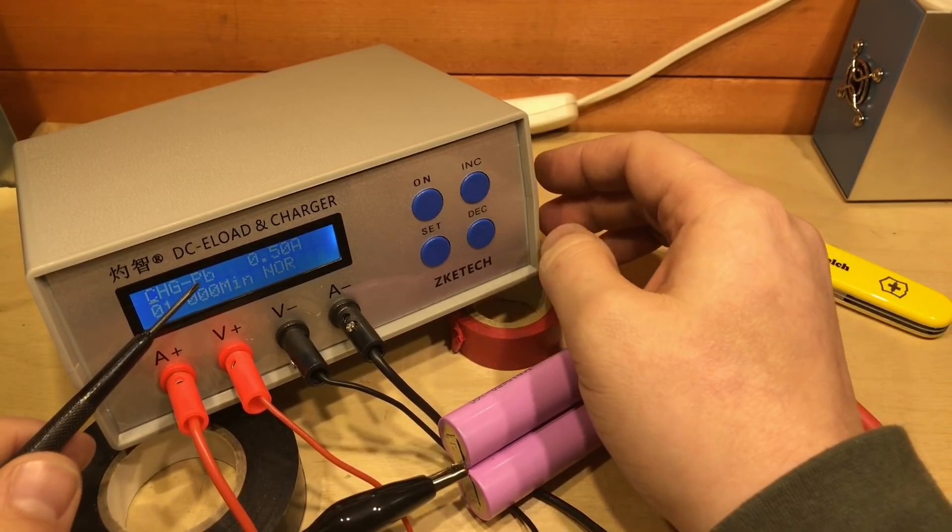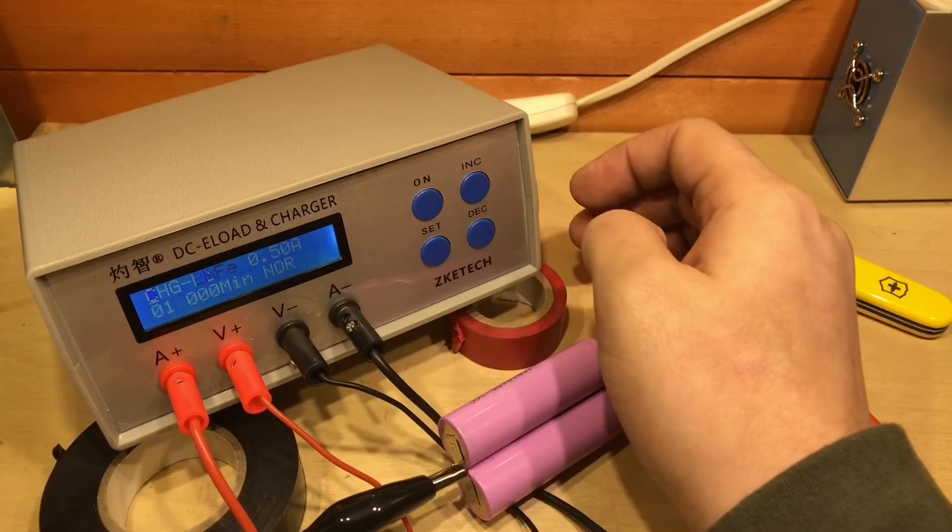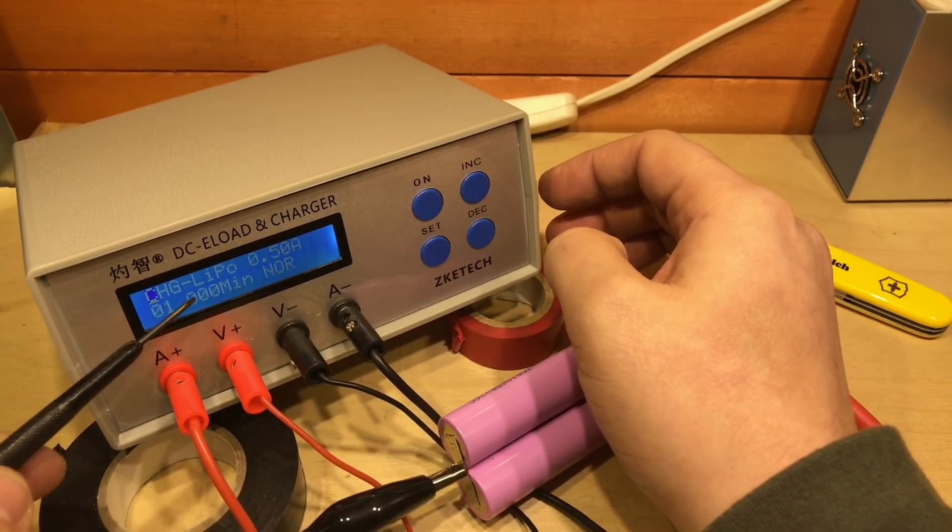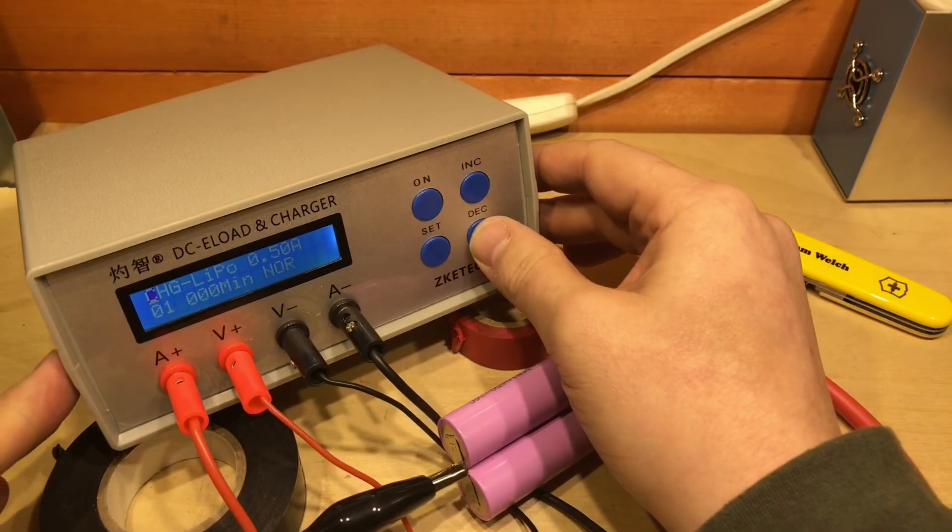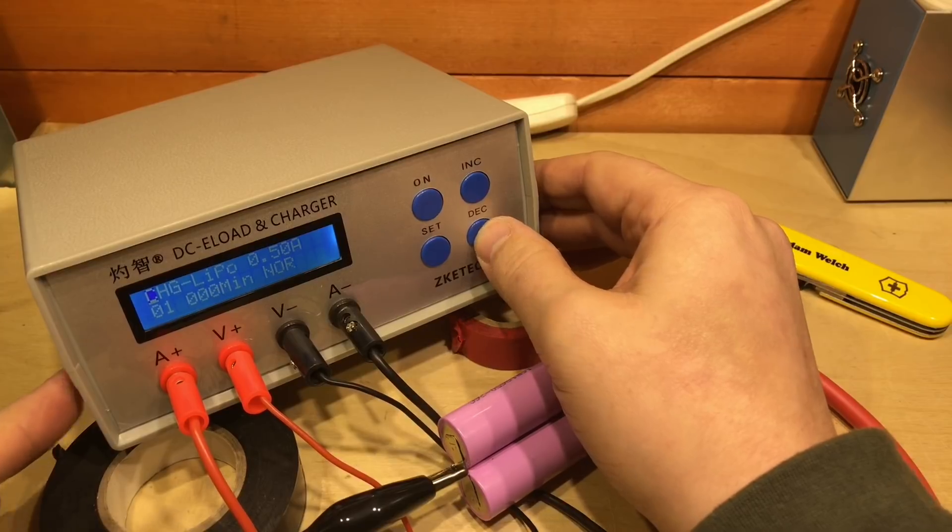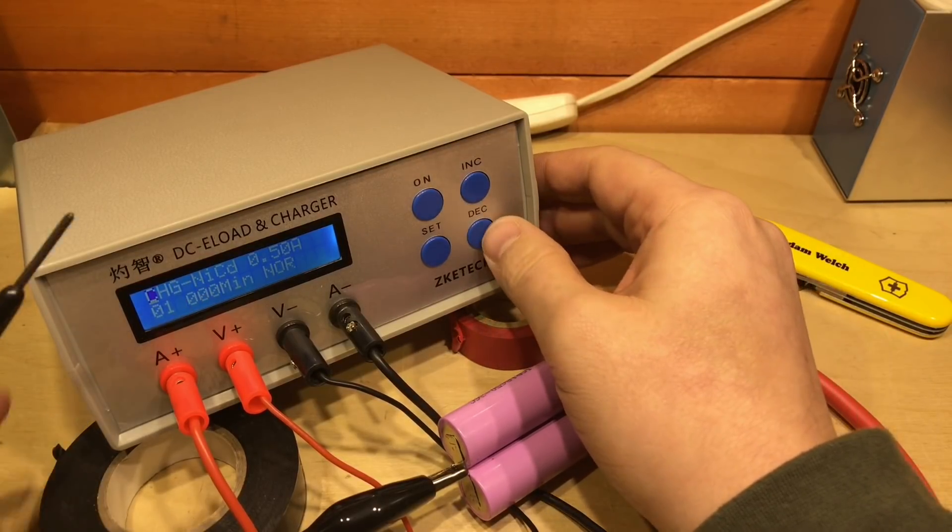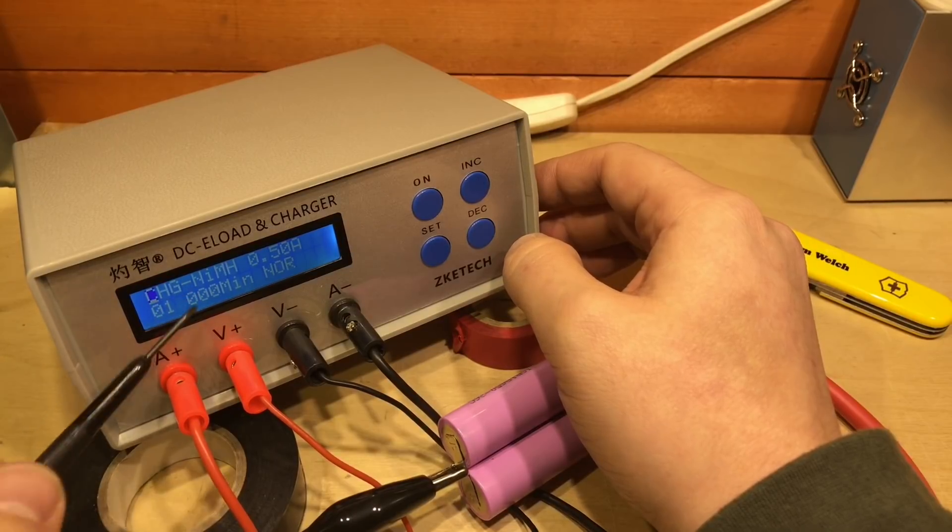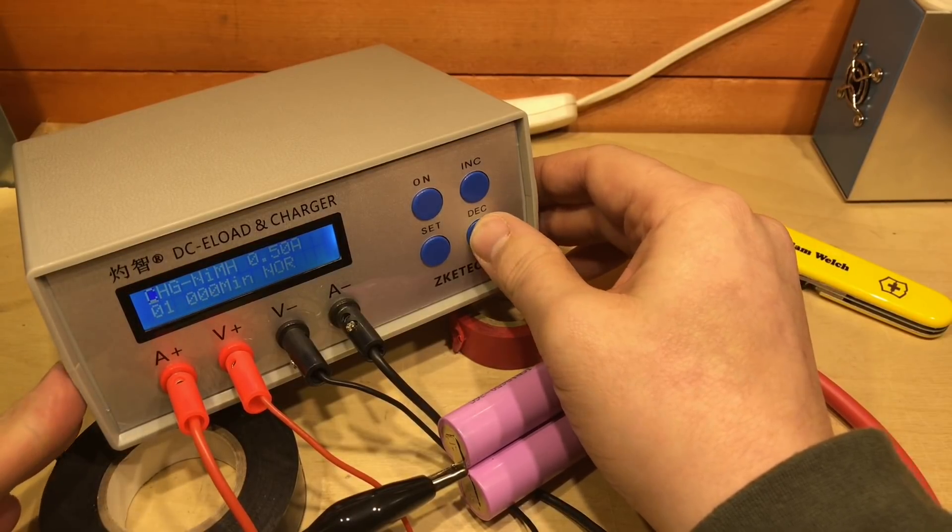Well we might want to change that. Charge lead acid, PB for lead, charge LiFePO4, and charge LiPo. So it has some menus, some options for charging different chemistries of batteries. And NiCad as well, and nickel metal hydride. So it really does do quite a few different chemistries.